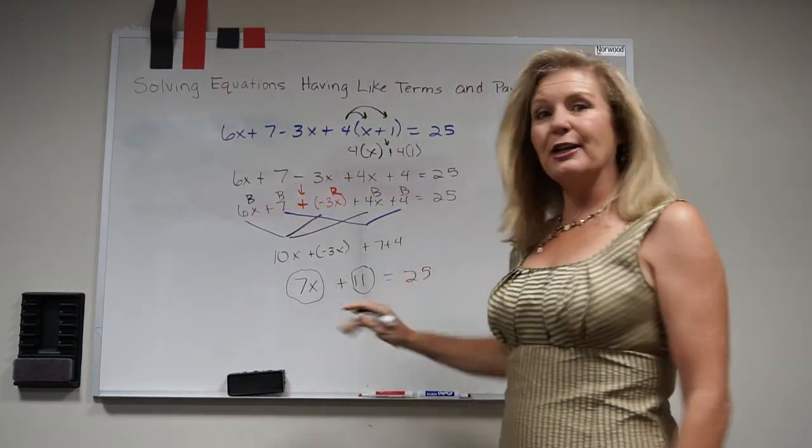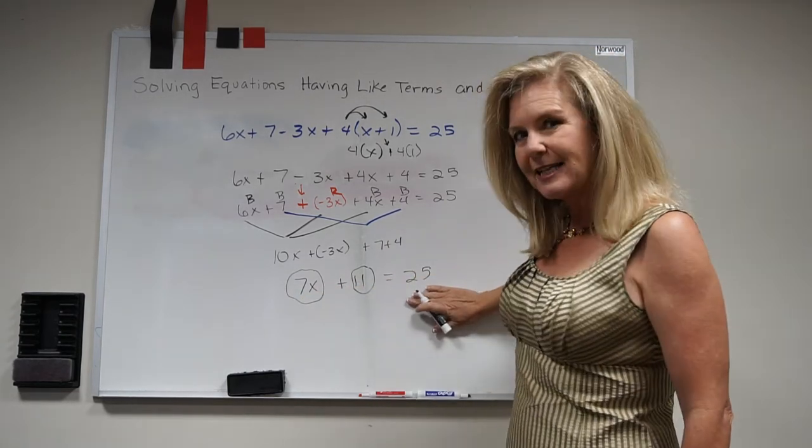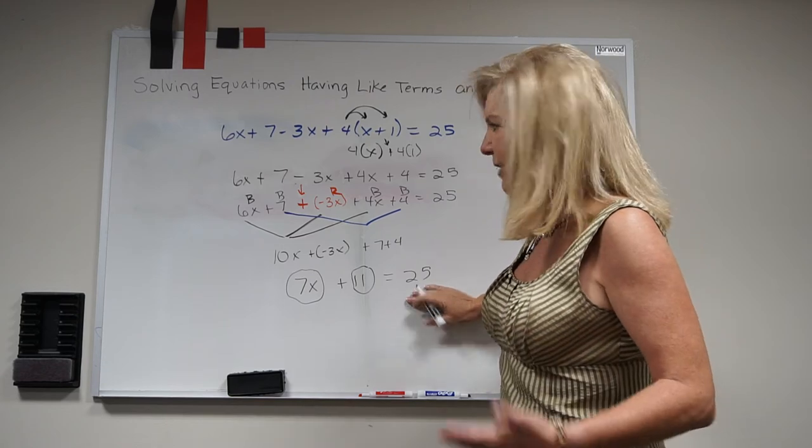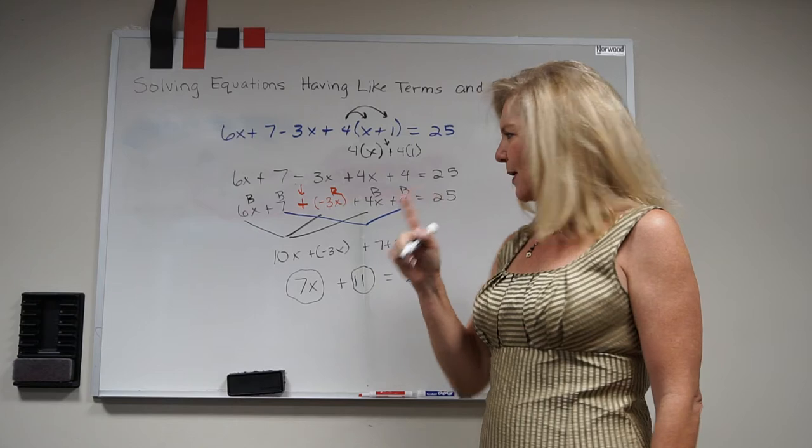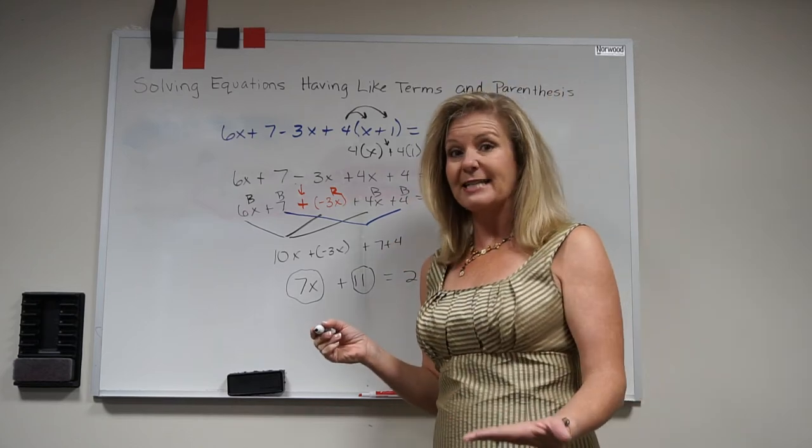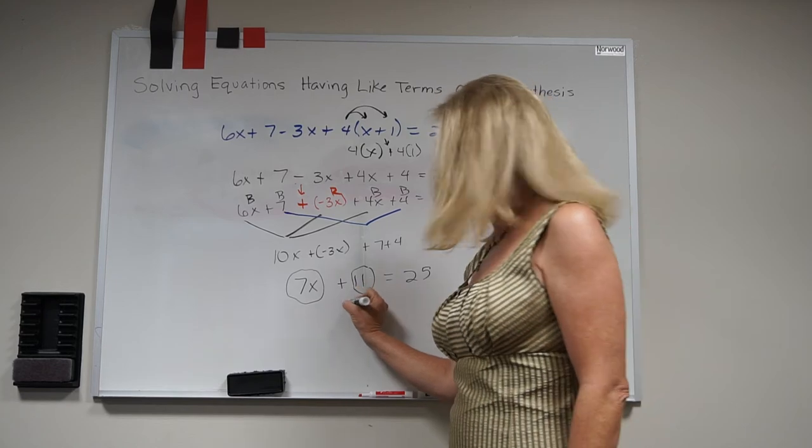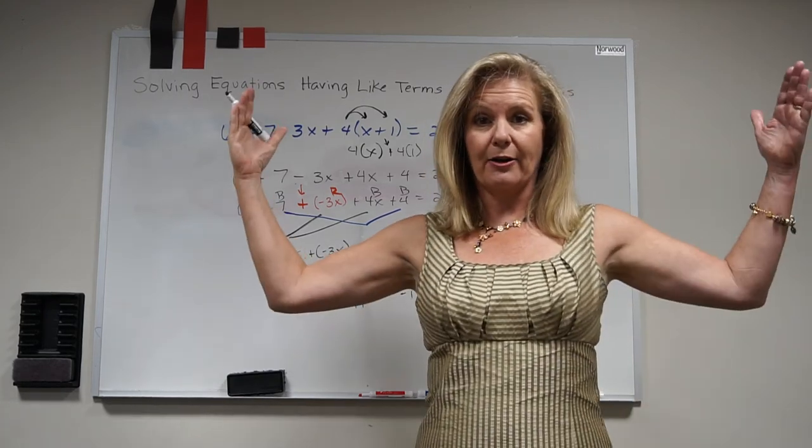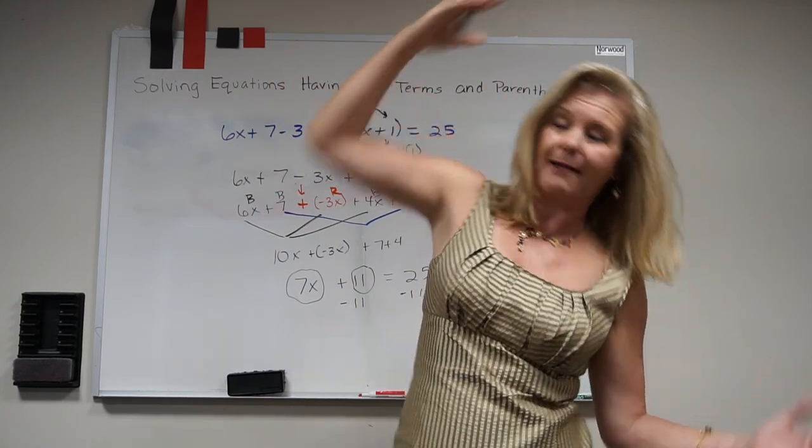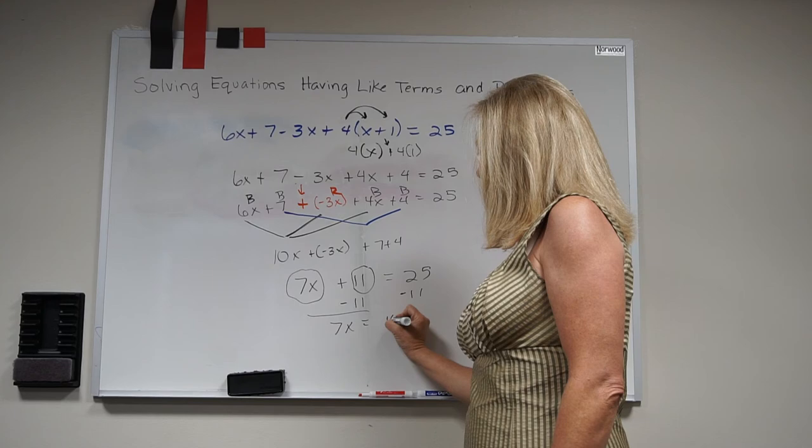And I know that the value of this side has to be 25 because the value of this side is also 25. My mission, I've got to figure out what x is. So I'm going to use inverse operations to actually solve this equation. So the inverse of addition is subtraction and whatever I do on one side I do on the other. If I don't I'm out of balance. When I finish with that I get 7x equals 14.